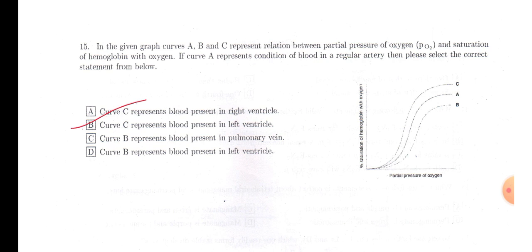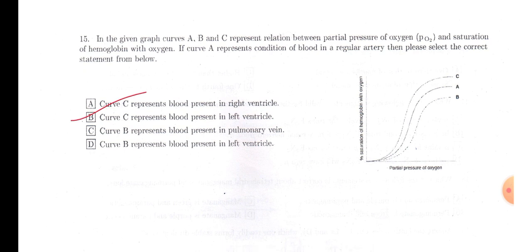Curve C represents blood present in right ventricle. So right ventricle, actually there is carbon dioxide mixed blood, so more carbon dioxide concentration will be there. So curve will not move towards the left, rather it will move to the right. So option A is not correct. Option B: curve C represents blood present in left ventricle. Look, in left ventricle there is oxygenated blood, so hemoglobin is more saturated with oxygen in that case. So there may be, this may be the reason for left side movement of oxygen dissociation curve. This will be the answer.